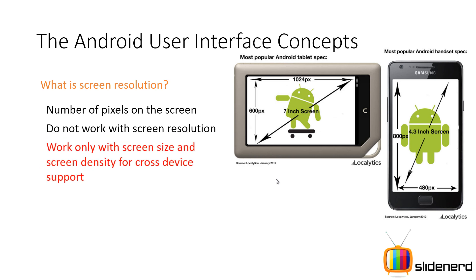There are four categories in screen size and four categories in screen density. You use those categories as resource qualifiers when you make layouts, user interface controls, or resources. Android offers you a way to categorize your user interface for different devices.